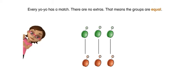Every yo-yo has a match. There are no extras. That means the groups are equal.